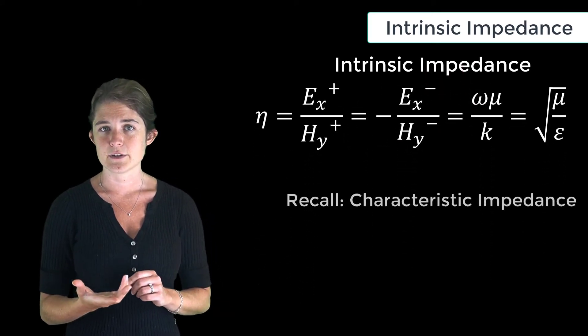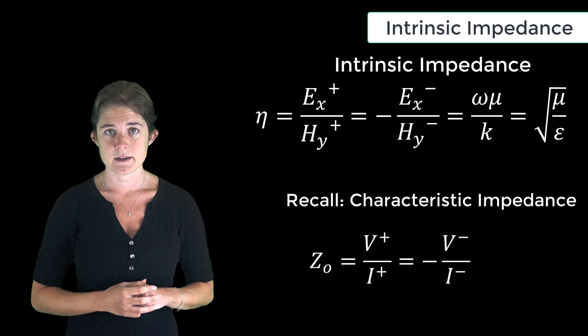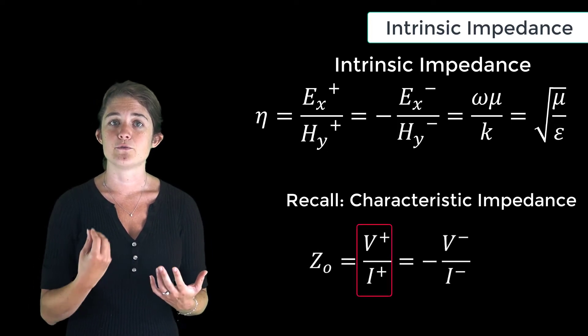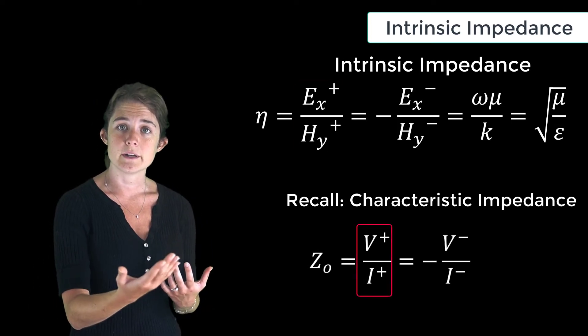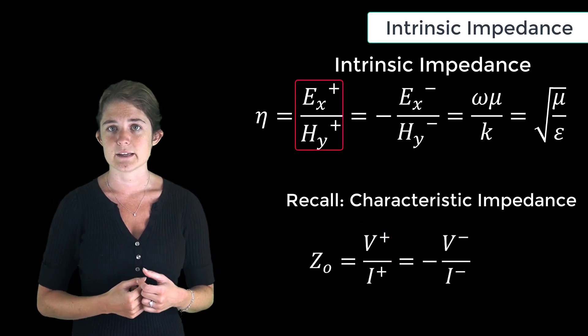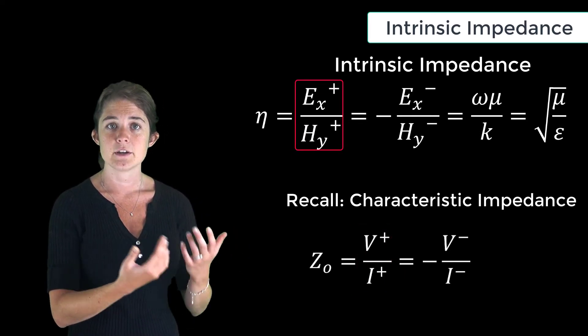In the same way that characteristic impedance gives the ratio of forward voltage to forward current, intrinsic wave impedance gives the ratio of forward electric field magnitude to forward magnetic field magnitude.